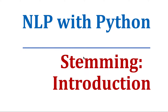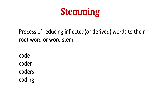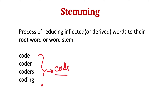Similar to removing stop words, stemming is a very powerful tool for reducing the size of the corpus that the model needs to work on. Stemming is the process of reducing inflected or derived words to their root word or word stem. For example, all these words — code, coder, coders, coding — belong to the same root word 'code', and they don't differ much in their meaning.